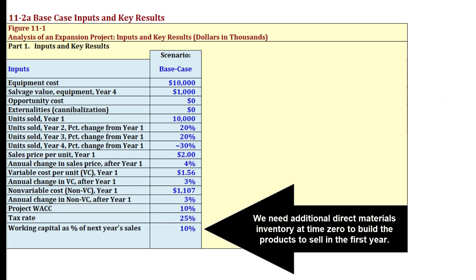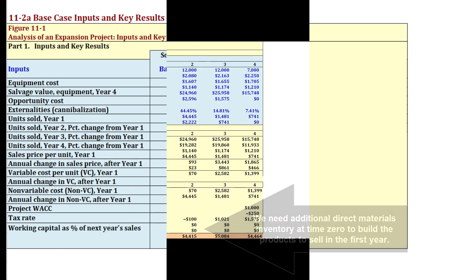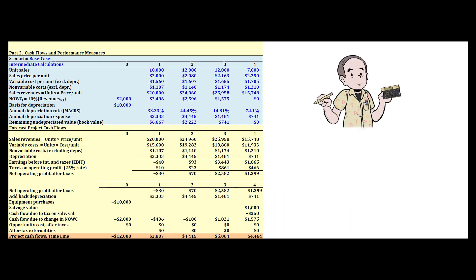Working capital is estimated as a percentage of next year's sales. We've got to buy some inventory to build the water heaters we're going to sell the following year, and we estimate that to be 10% of next year's sales. Now let's plug those assumptions into our model and see what kind of base case we get.